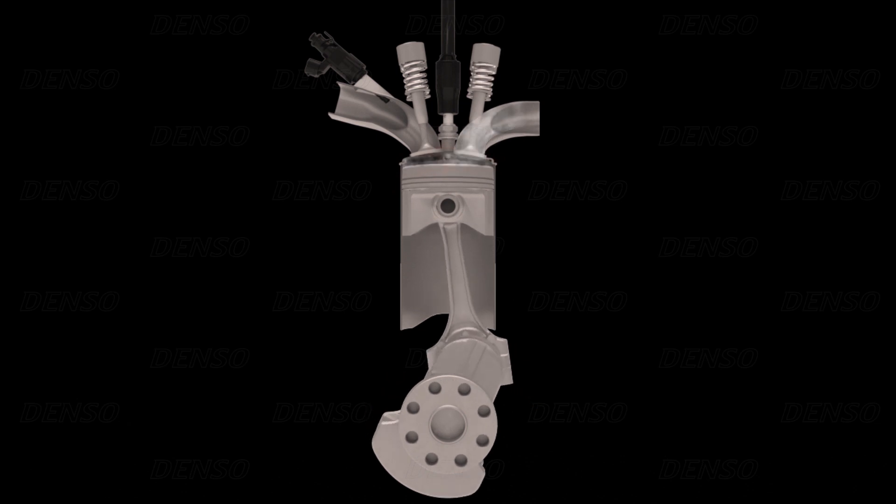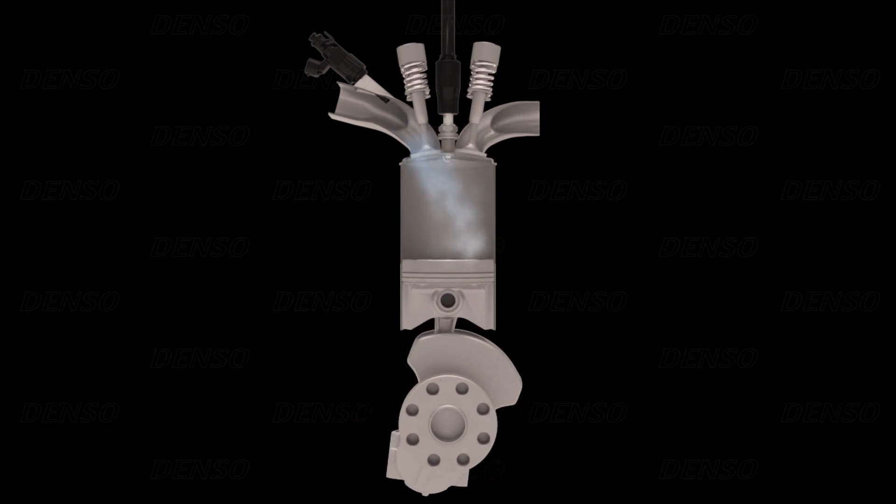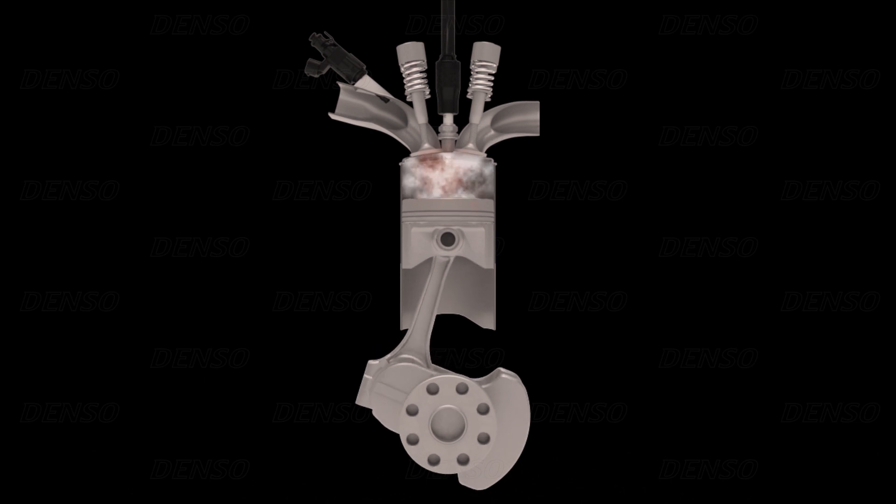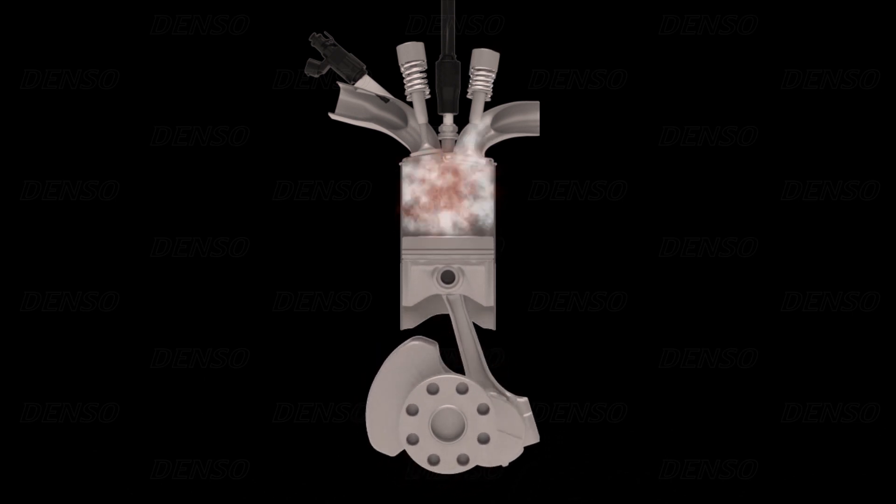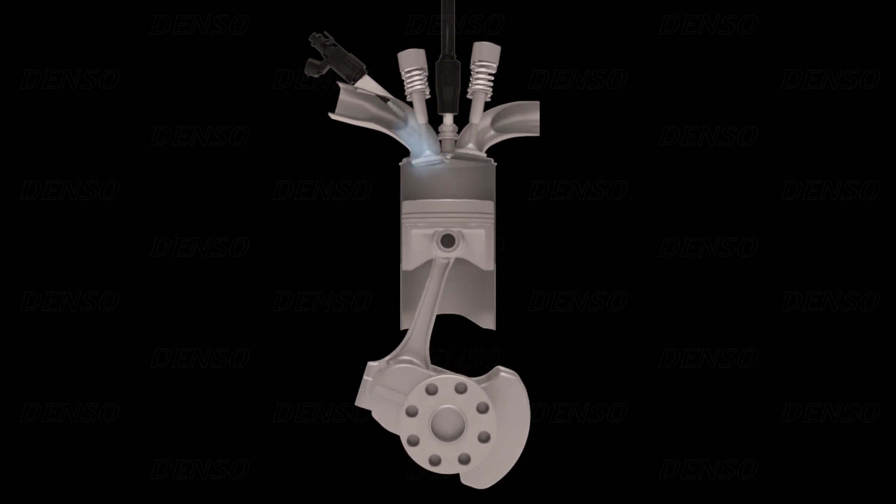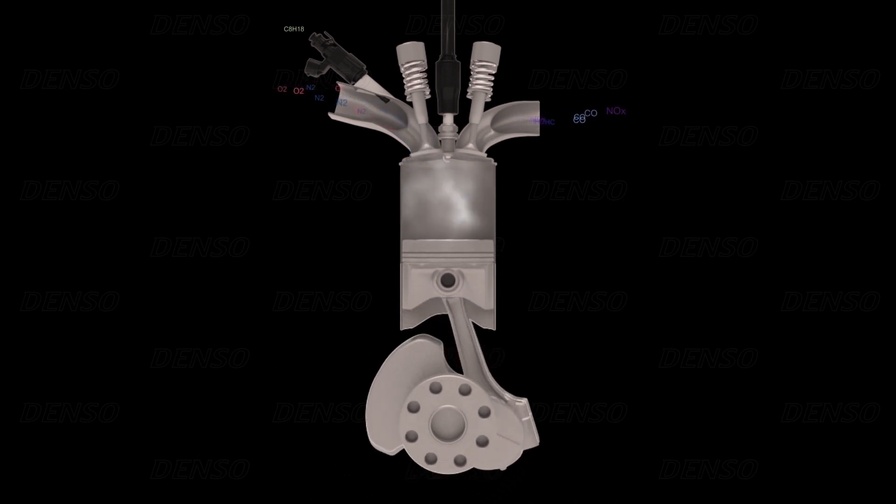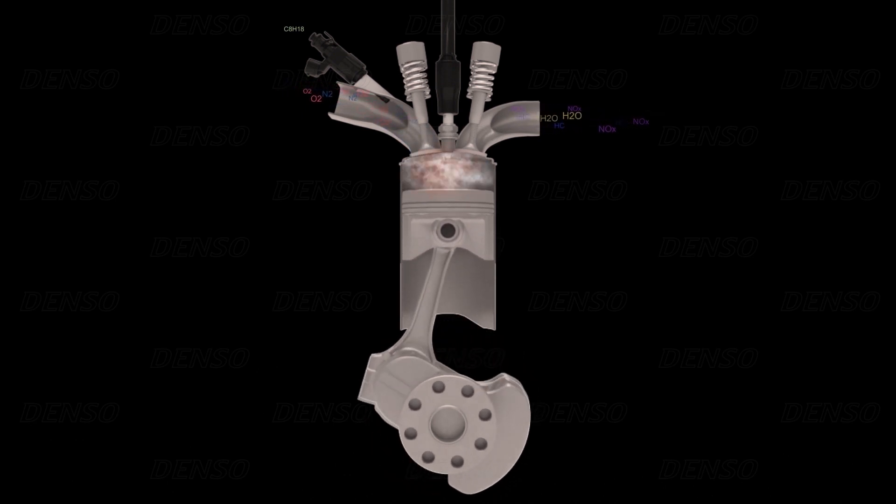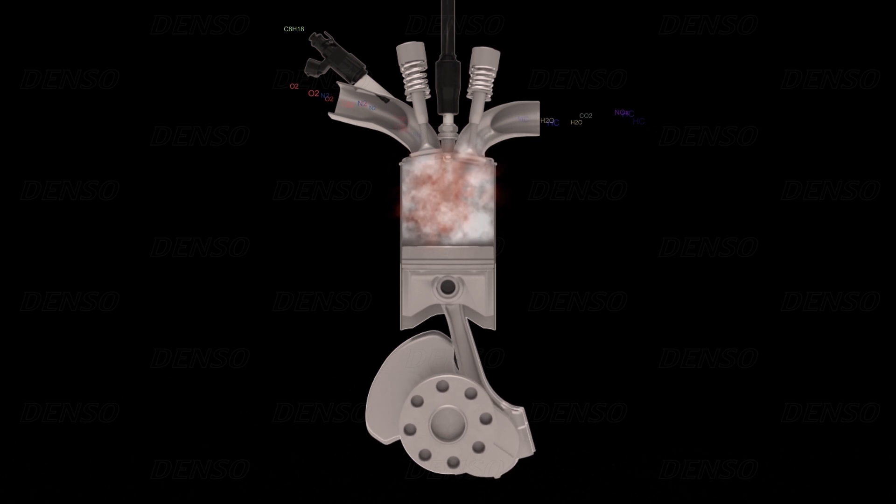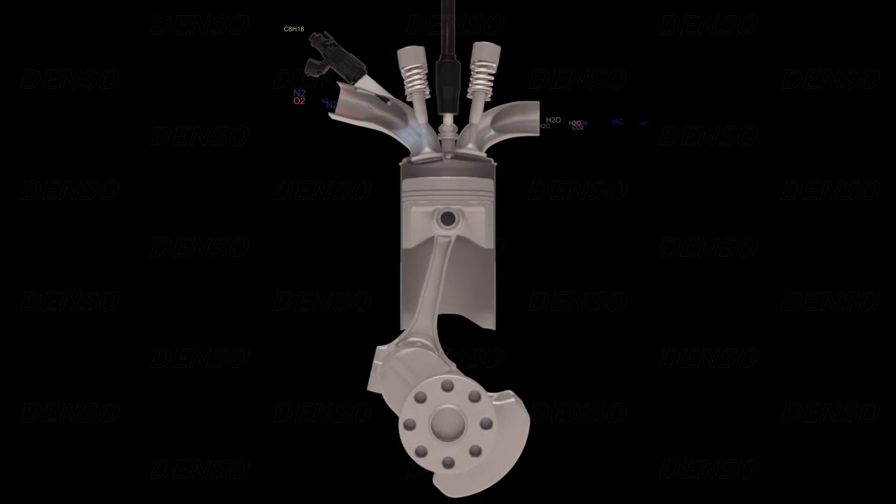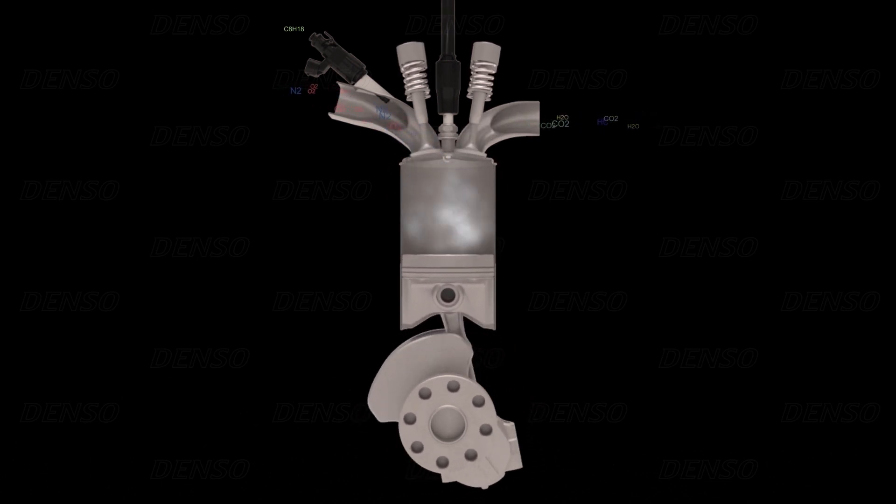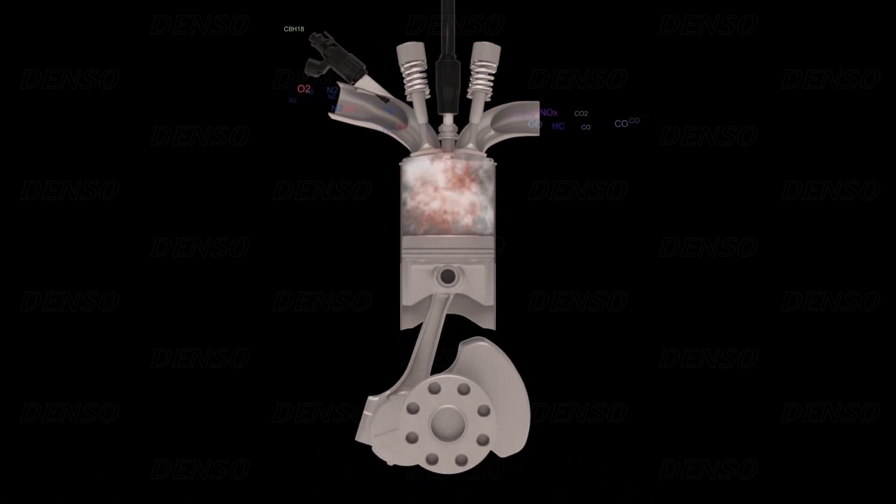Combustion of fuel creates pollutants that are harmful for both the environment and our health. The three most important pollutants that need to be minimised are carbon monoxide, hydrocarbons and oxides of nitrogen. These pollutants can be reduced using three-way catalytic converters that were introduced at the beginning of the 1980s.